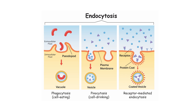There is also pinocytosis, which is referred to as cell drinking. This brings in smaller molecules, like ions surrounded by extracellular fluid — it is pinched in the same way with the cell's membrane and comes in as a vesicle. There is also receptor-mediated endocytosis, which is a very specific type of endocytosis.